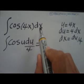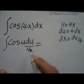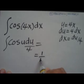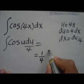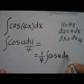We substitute this back in for dx. We have du over 4 here. Now we are ready to solve the problem. So now what we have is 1 over 4, the integral cosine u du.